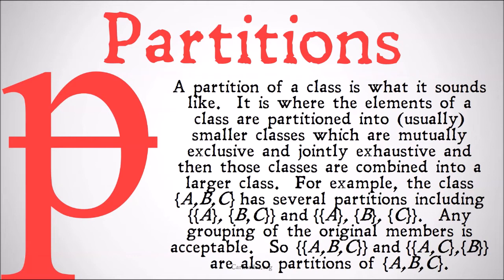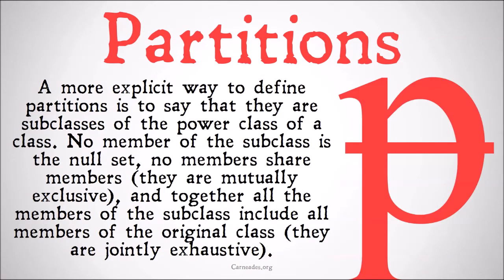We're adding extra brackets. In the same way that unions kind of shave off a pair of brackets, partitions add another one internally to the class. A more explicit way to define partitions is to say that they are a subclass of the power class of a set, or of a class. No member of the subclass is the null set, and no members share any members. They're mutually exclusive, and together, all the members of the subclass include all members of the original class — they're jointly exhaustive. We're basically just splitting up the original class. You're not going to change any of the letters; you might change the order, but you're just adding sets of brackets around all of them such that the new class is made up exclusively of subclasses of the old class.